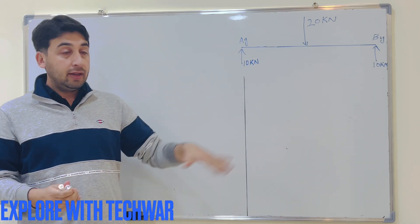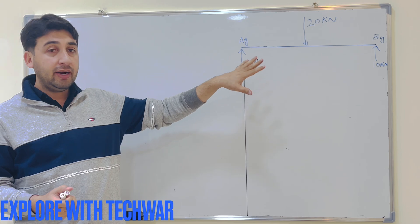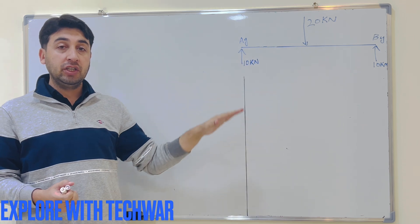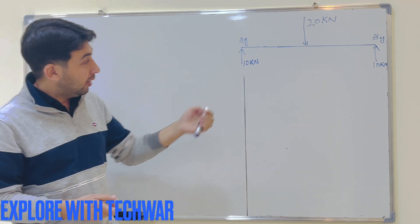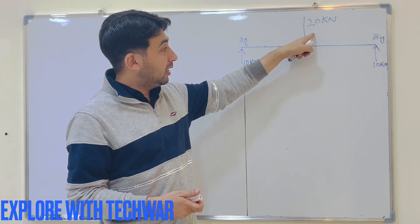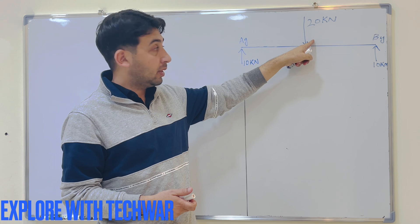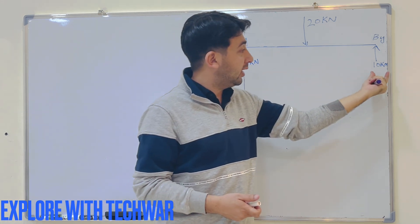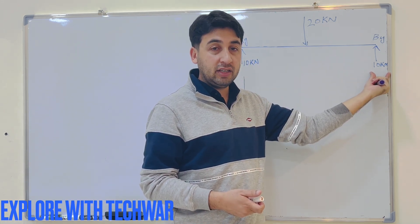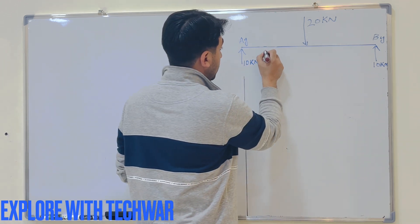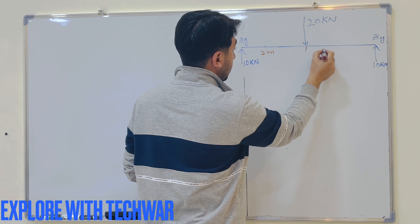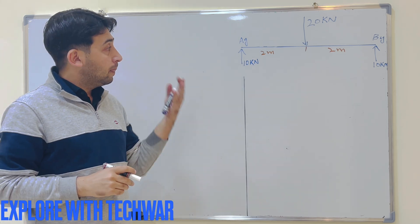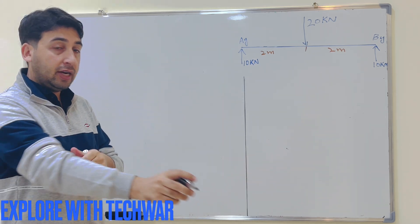In this video we will solve a simple problem to find the shear force and bending moment on a beam and draw the shear force and bending moment diagram. Here we have a beam with one force of 20 kN acting in the middle, and two reaction forces: Ay = 10 kN acting upward and By = 10 kN acting upward. The length of the beam is 2 meters on each side, so the total length is 4 meters.